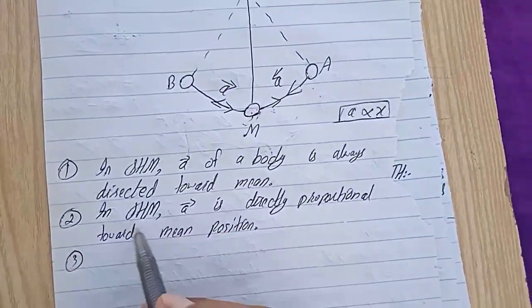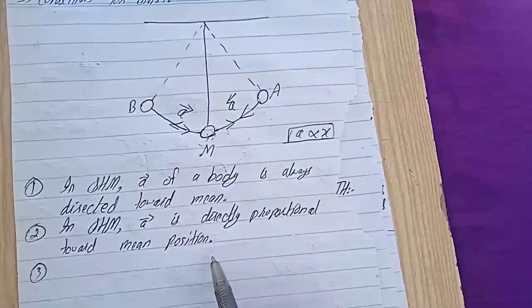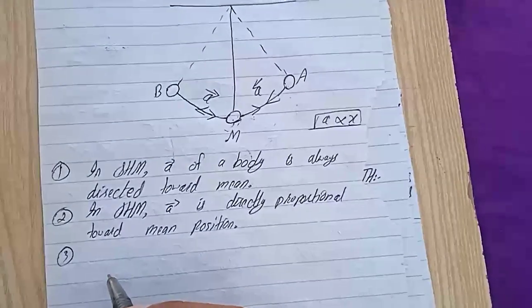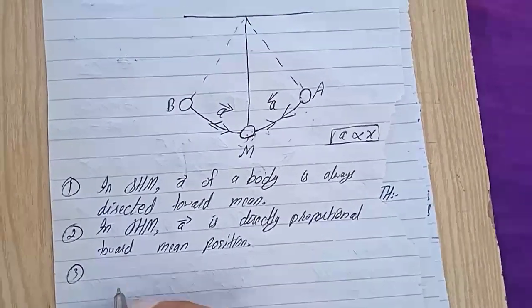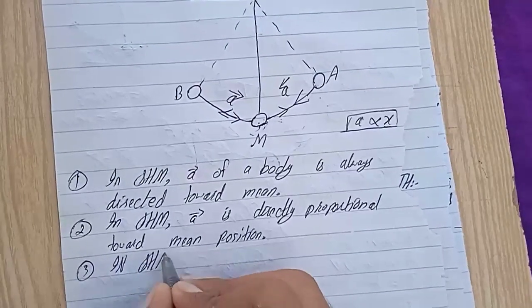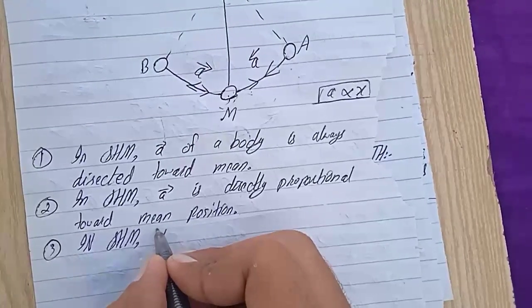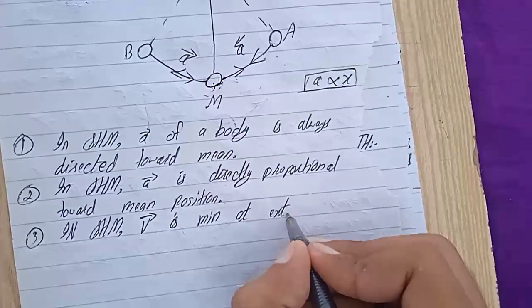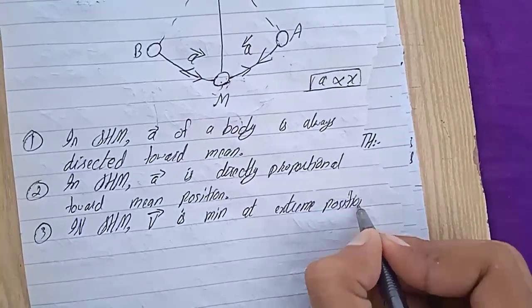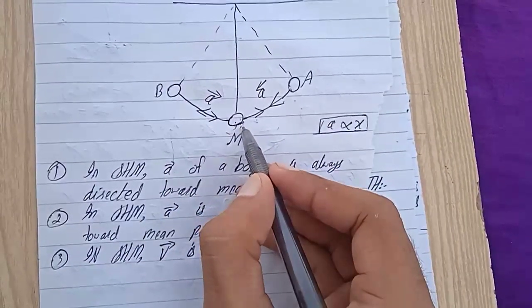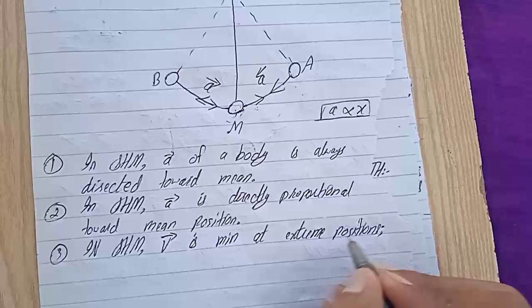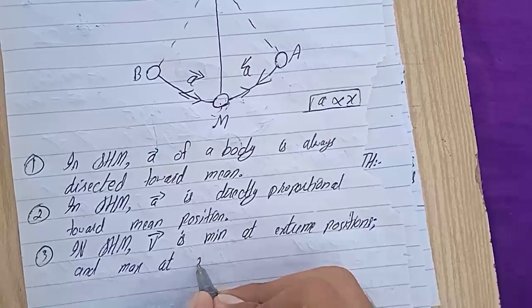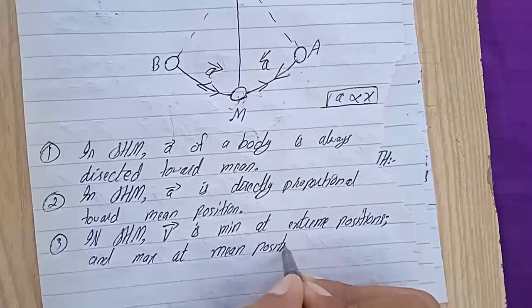Third condition. Now if you have explained the acceleration is directly proportional, you can tell the whole point that at mean it will be minimum or zero, and at extreme positions it will be maximum. Now let me tell you about the topic of velocity. In SHM, velocity is minimum at extreme positions A and B, and velocity is maximum at mean position M. Maximum at mean position.